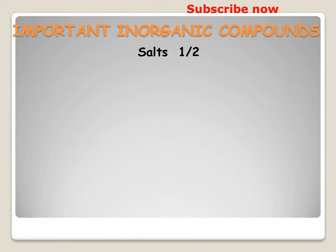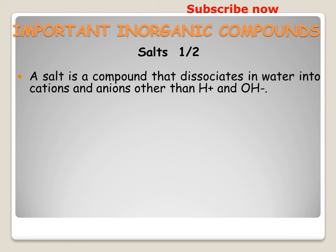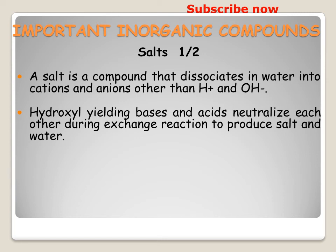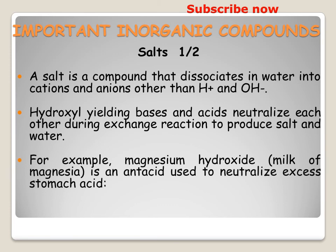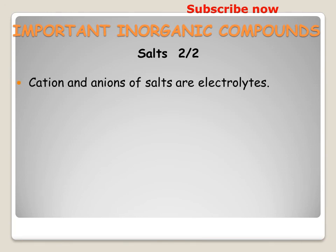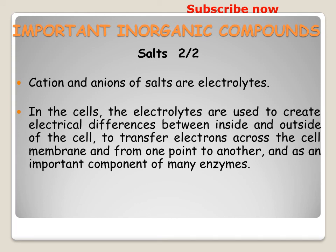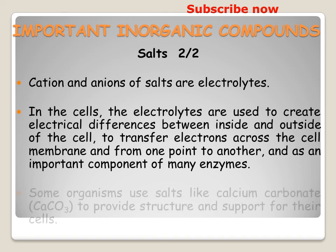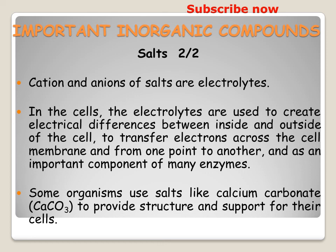A salt is a compound that dissociates in water into cations and anions other than hydrogen and hydroxyl ions. Hydroxyl-yielding bases and acids neutralize each other during exchange reactions to produce salt and water. For example, magnesium hydroxide — that's milk of magnesia — is an antacid used to neutralize excess stomach acid. Cations and anions of salts are electrolytes. In the cell, electrolytes are used to create electrical differences between the inside and outside of the cell, to transfer charges across the cell membrane, and as important components of many enzymes. Some organisms use salts like calcium carbonate to provide structure and support for their cells.